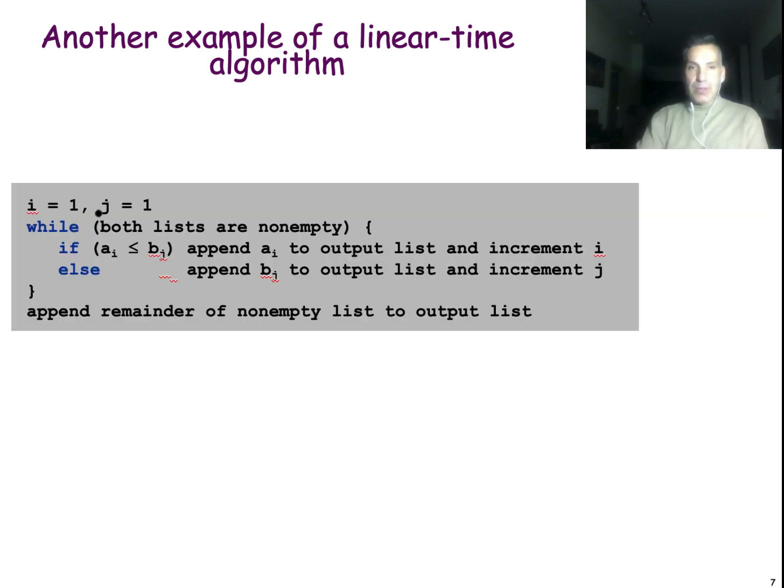So we have the pointers i and j. We have this while loop, where as long as both of the lists are not empty, we compare the i-th element of A and the j-th element of B. If the former is smaller or equal, then we move it to the output list and we increment the pointer i. If the smaller element is bj, then we do the same thing for bj and we increment the pointer j. As long as both of the lists are not empty, when one of the lists becomes empty, then we just copy the remainder of the non-empty list to the output.